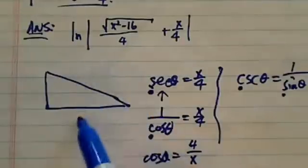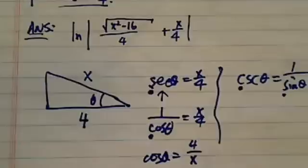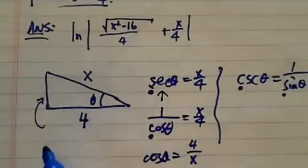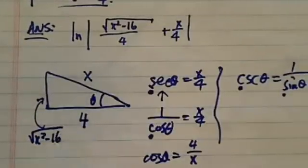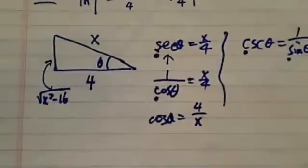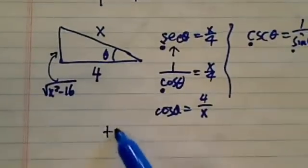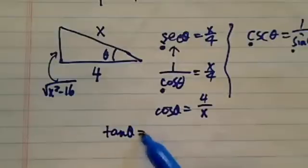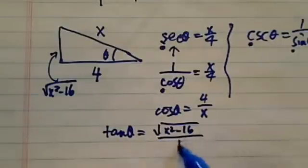So we have this is theta, and then here's my x. Using the Pythagorean theorem, this short line here is x squared minus 4 squared, which is 16. From this triangle relationship, it's pretty easy to say that tangent theta is really radical x squared minus 16 divided by 4.